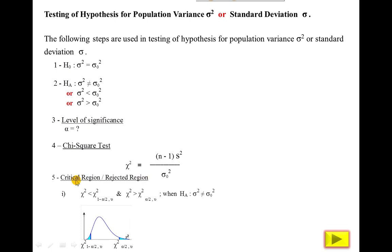The fifth step is the critical region or rejected region, same as for the mean with T test and Z test — we have three choices depending on the symbol of the alternate hypothesis. For not equal to, we divide alpha by 2. In this chi-square test used for variance, variance is always positive and cannot be negative, so there is no negative sign.